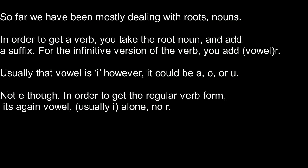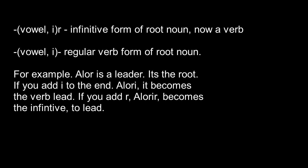The verb from that root noun — you add a vowel. Normally that vowel will be I. However, it's possible to have an A, an O, or a U; it's just more rare. I is the most common. It won't be an E, which I will go over later. So to make your root into a verb, you add I or another vowel. To make it into the infinitive version, you add that vowel and then an R. So you have your root and you add a vowel — it's a verb. If you add an R after that vowel, then it's an infinitive. That vowel should not be an E.